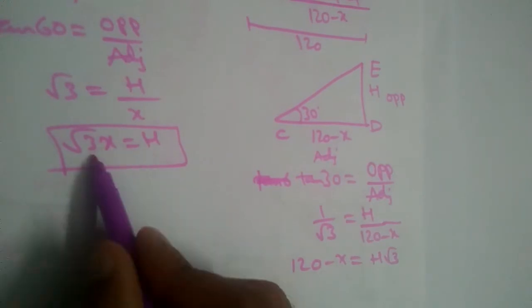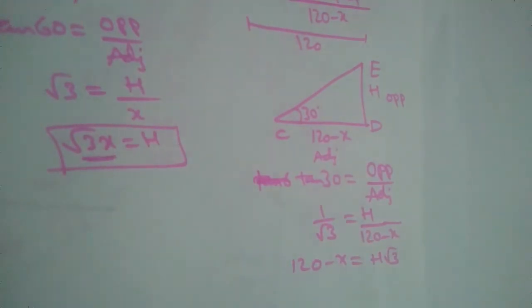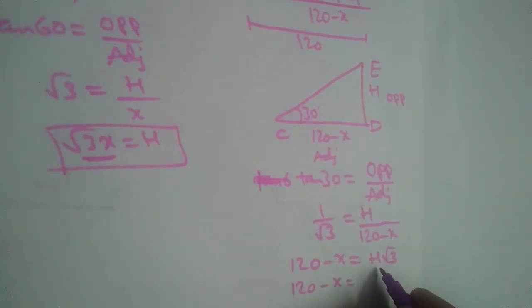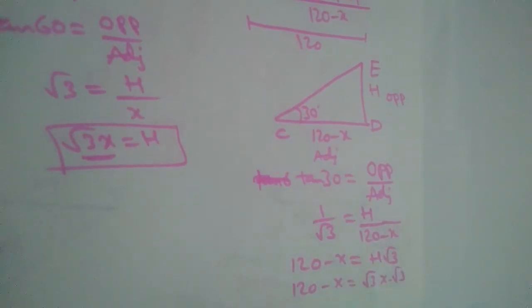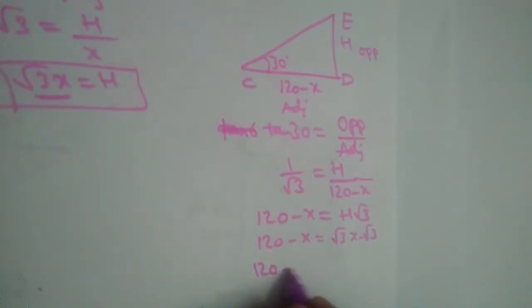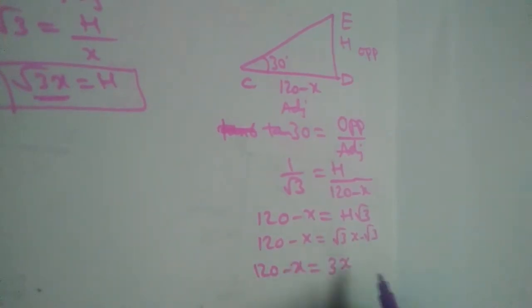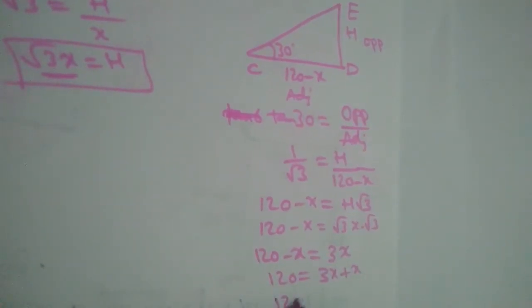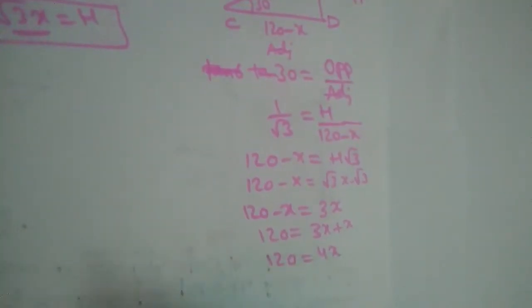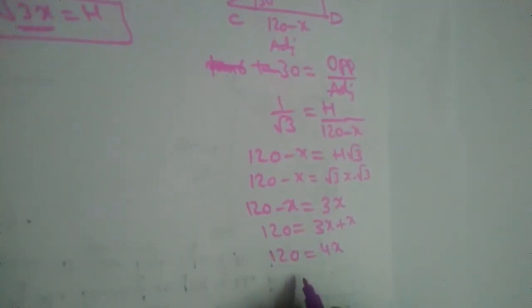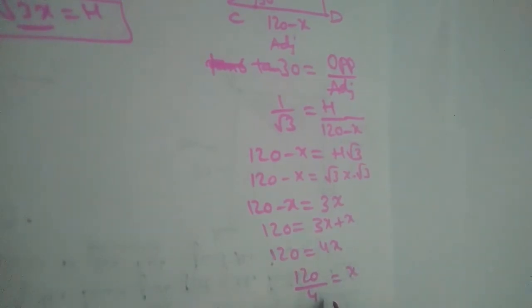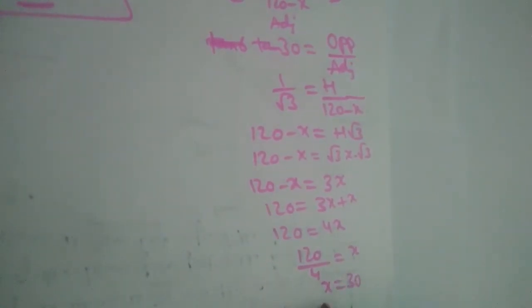Now, what is the value of H? It is X√3. Let us substitute that: 120 minus X equals X√3 times √3, which gives 120 minus X equals 3X. Sending X to the other side: 120 equals 3X plus X, so 120 equals 4X. Therefore X equals 120 divided by 4, which gives X equals 30.